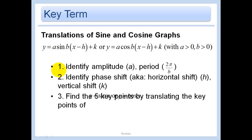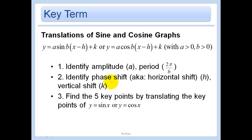The first thing you're going to do in these problems is identify the amplitude, which is just your a, and your period, which is 2π over b. I don't need the absolute value of b here because I restricted b to being greater than zero — this is the same thing we did in yesterday's lesson. The second thing we're going to do, which is new, is identify the phase shift, which is the same as the horizontal shift we've been talking about all year — that h thing.